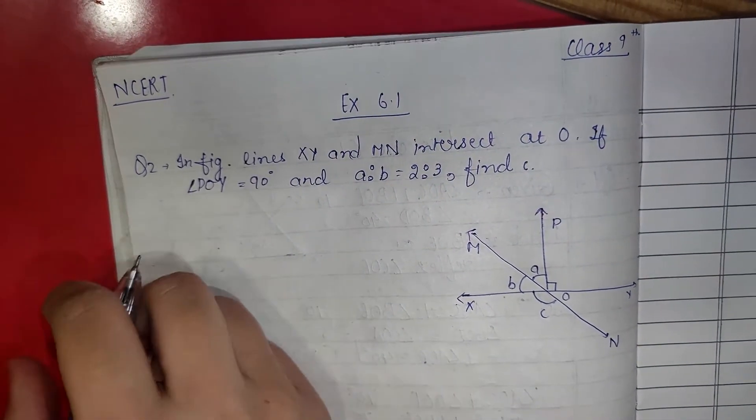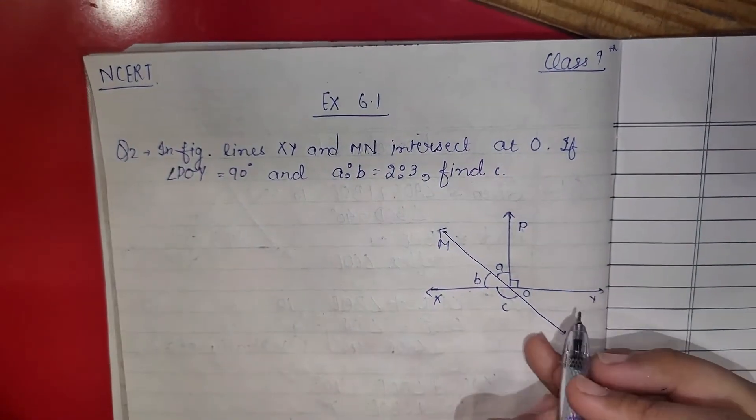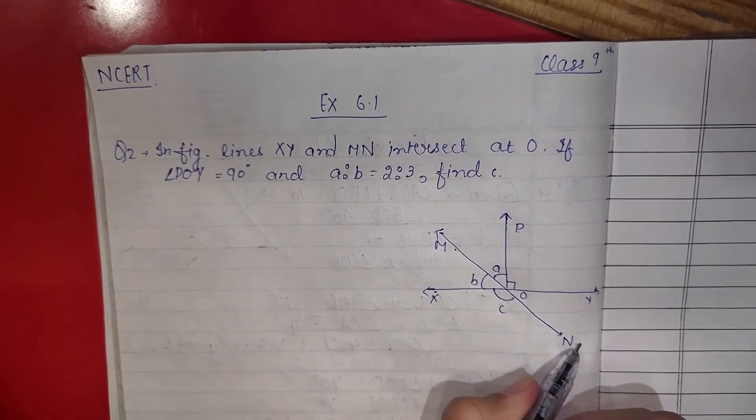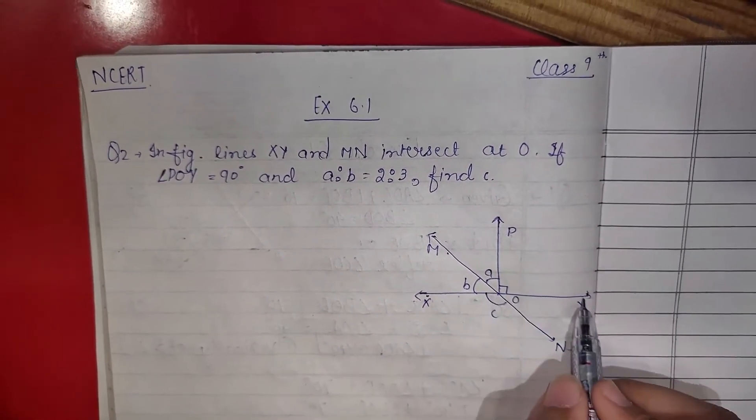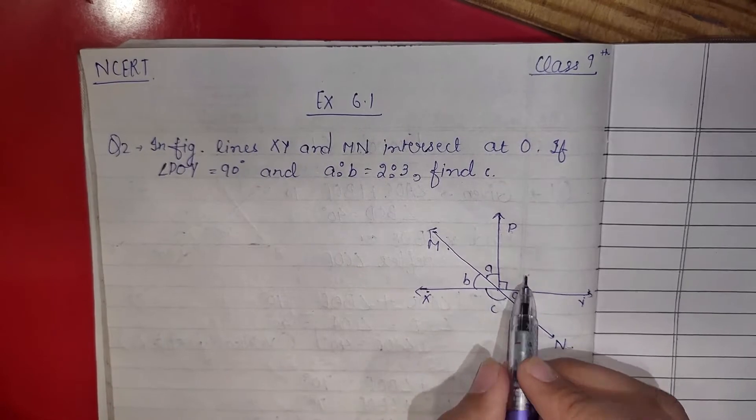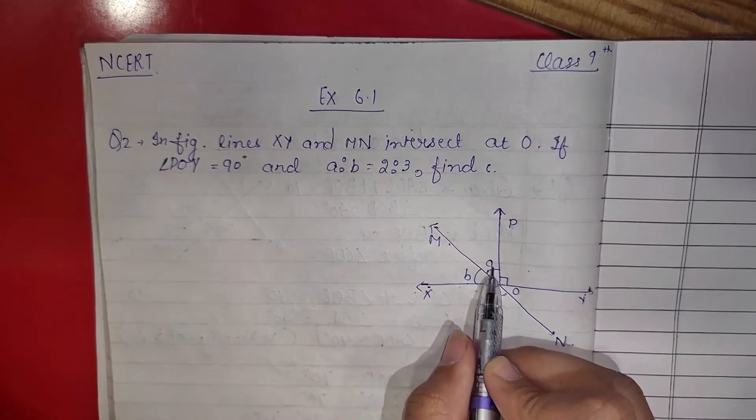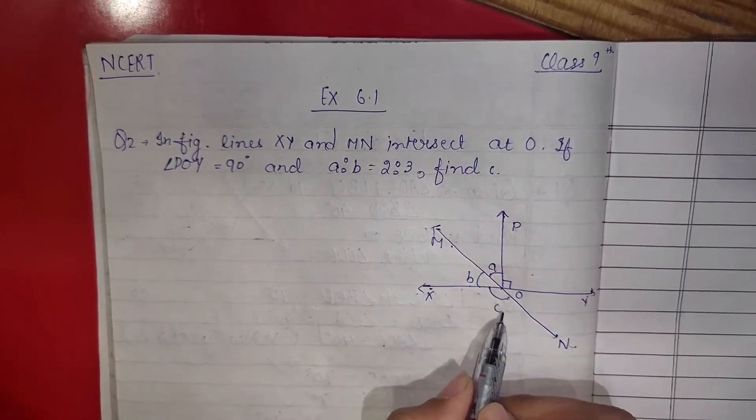So let's start. In the figure, lines XY and MN intersect at O. If angle POY is equal to 90 degrees, we have ratio a:b and we have to find angle c.